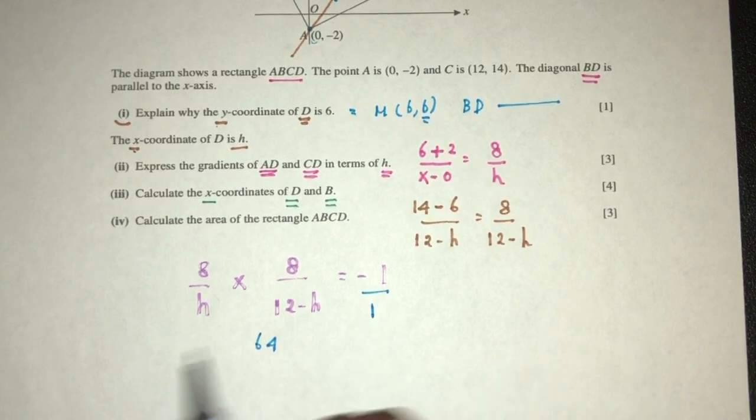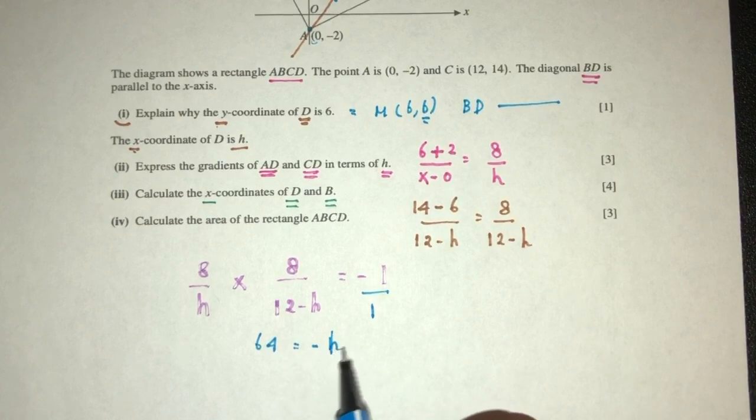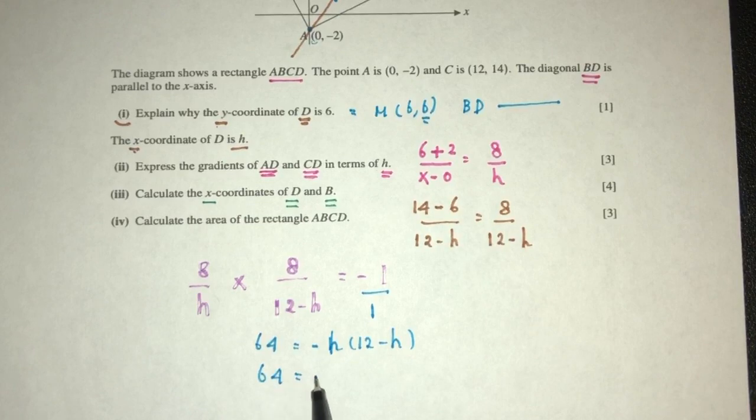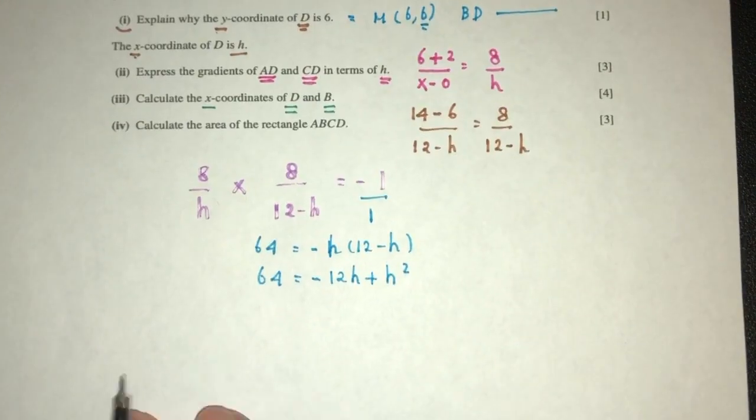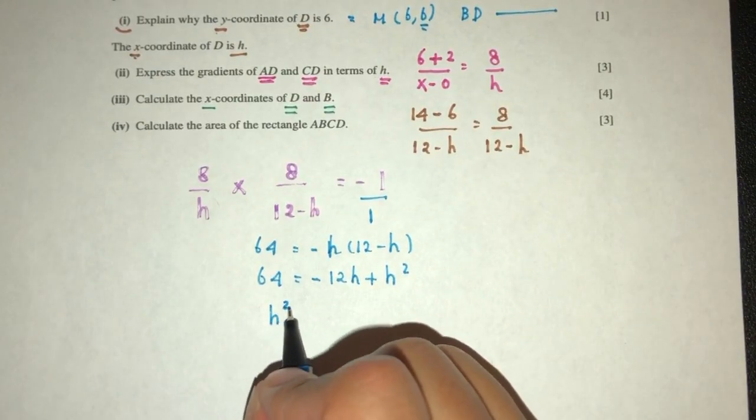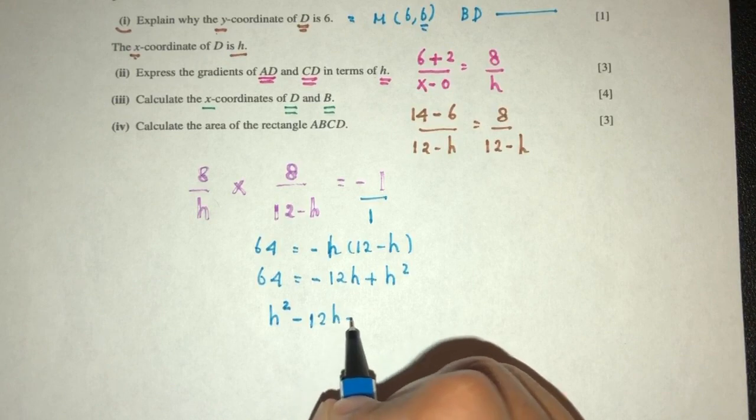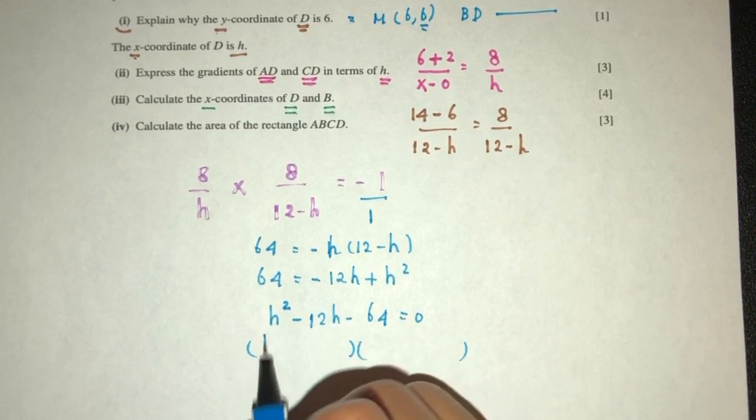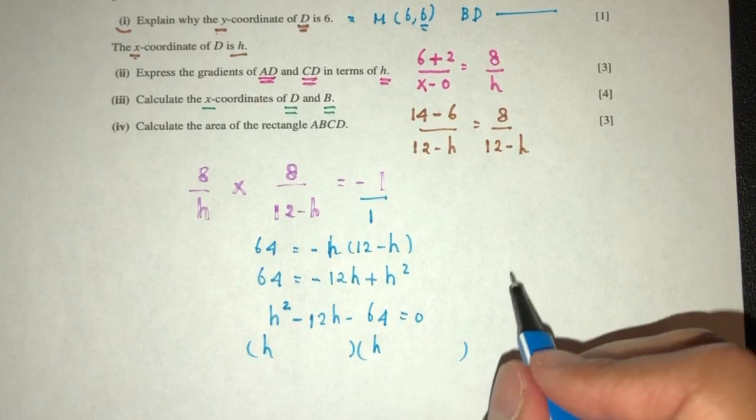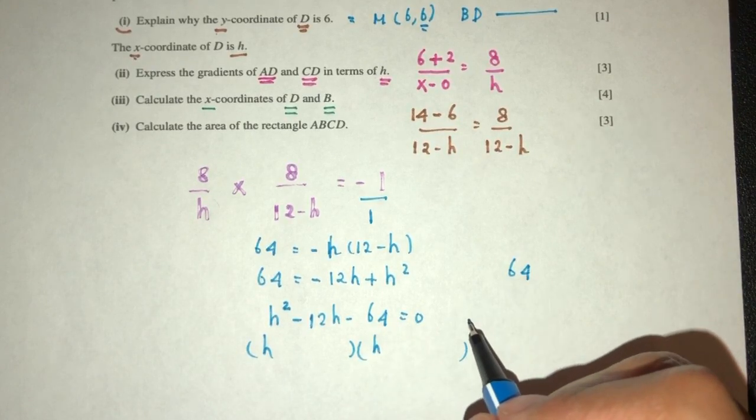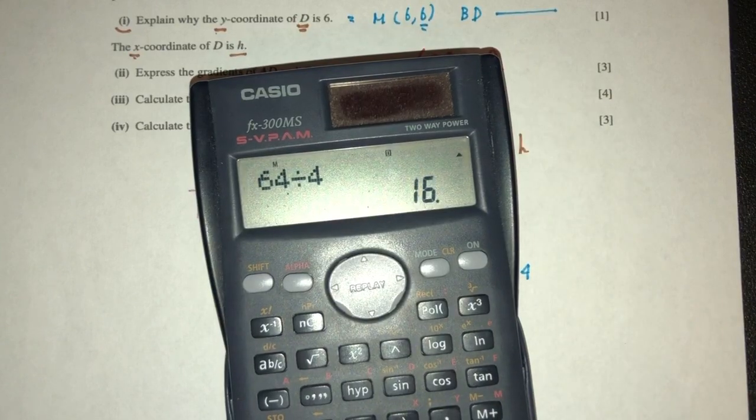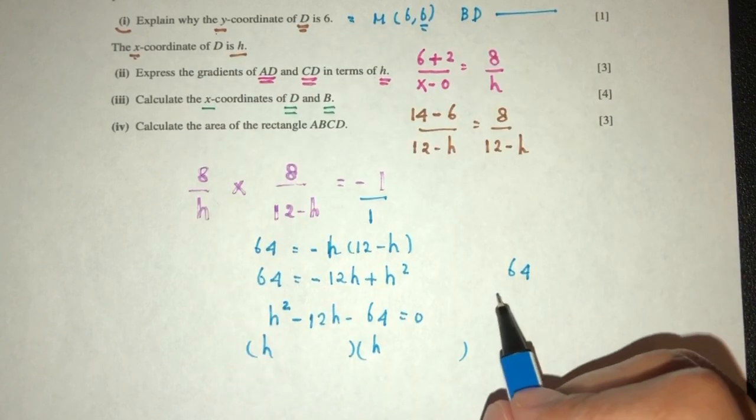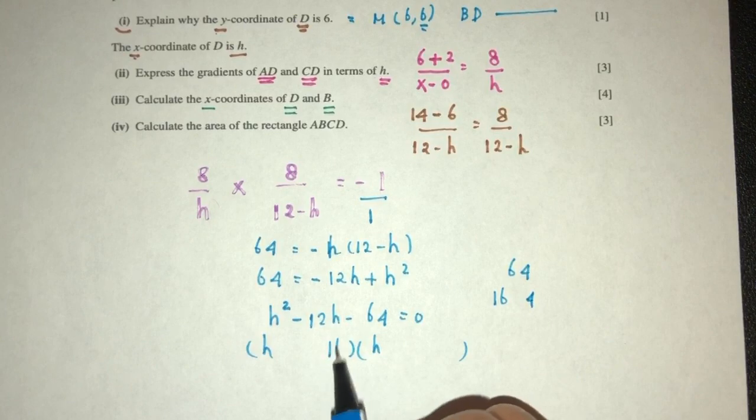We have 64. Then we can just cross multiply. That will become minus 1 times 12 minus h times 12 minus h. That will be 64 equal to minus 12h plus h square. So putting everything to one side, you will have h square minus 12h minus 64 has to be 0. Factorize. This times this. 64 divided by 4, that should be 16. So 16 times 4.